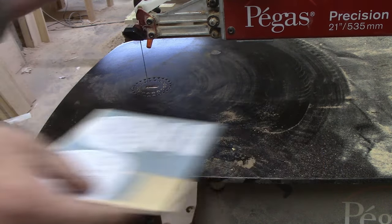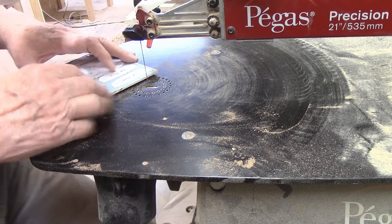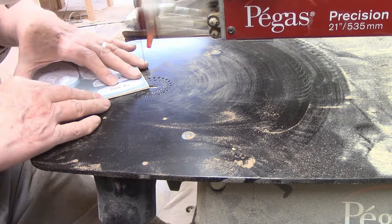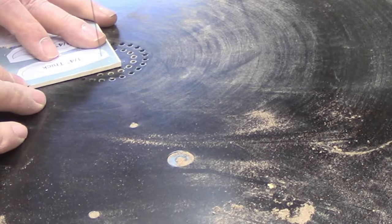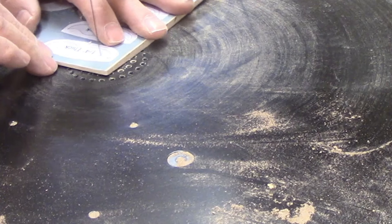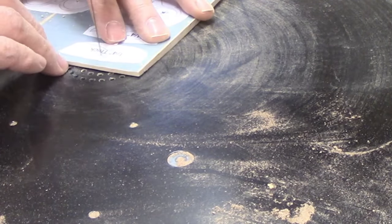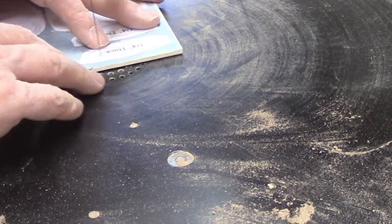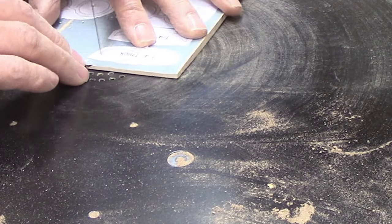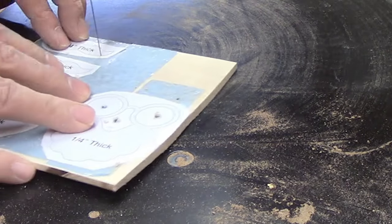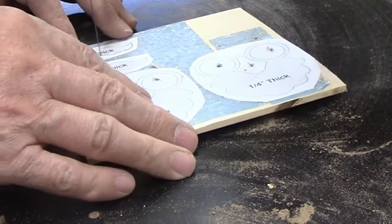I plucked the blade to check it for proper tension, and that note told me that it is set correctly. If you have a scroll saw with a variable speed control like the Pegas, you might want to slow it down to cut these parts. For material this thin, even a number three blade might be a little too aggressive, and slowing the blade down will make cutting less assertive.